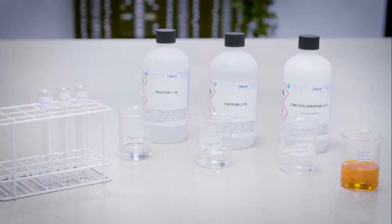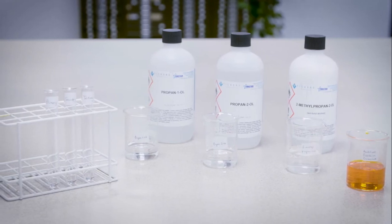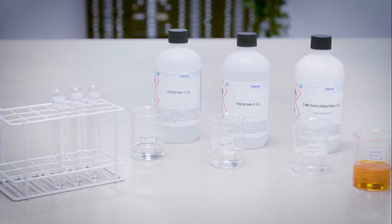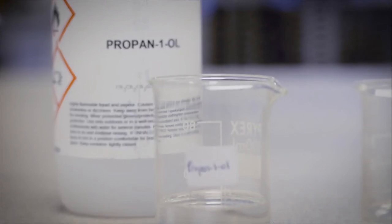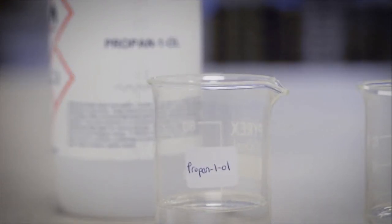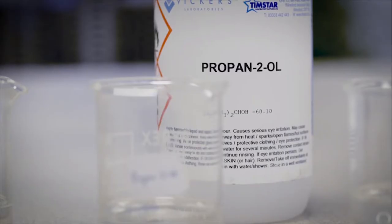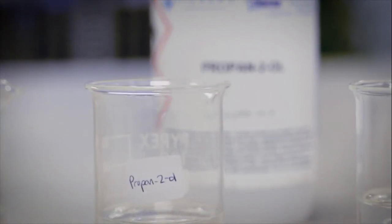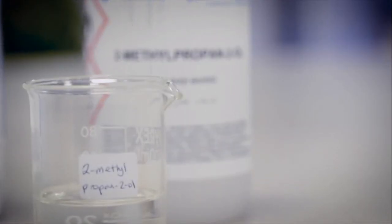For this test, the three test tubes should be labelled primary, secondary and tertiary. The primary alcohol used is propan-1-ol. The secondary alcohol used is propan-2-ol. And the tertiary alcohol used is 2-methylpropan-2-ol.